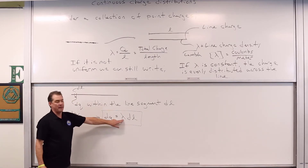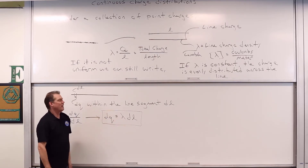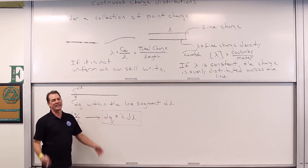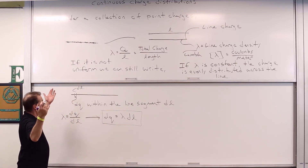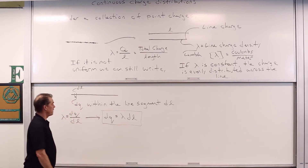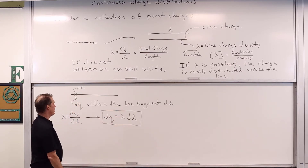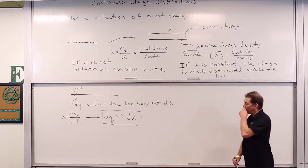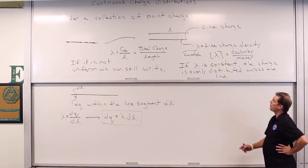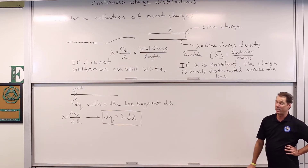This works whether lambda is constant or lambda is varying or described by some function. For us, we're going to keep lambda constant in this course, though it is possible later on you'll see varying line charge densities spatially. This is a good representation because now we think about determining what the electric field is due to a line charge.